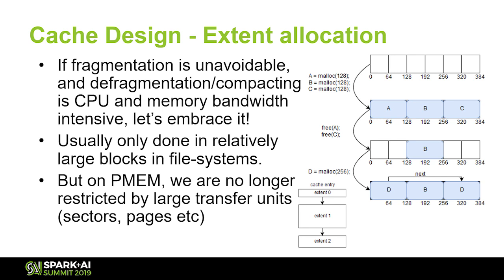We took a lesson from file systems, which are also long-running heaps that deal with fragmentation. They typically allocate blocks or extents — older file systems use fixed block allocations, newer ones use extent allocation with variable block size. We implemented an extents method of allocation in our cache, which allows us to concatenate two blocks of memory to allocate a single cache entry. This works very well and we can achieve very high degrees of space efficiency.